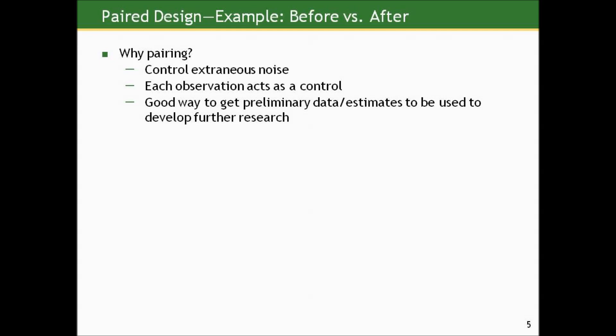So we're going to start with an example to set this up. This is data on 10 non-pregnant premenopausal women between 16 and 49 years old who were beginning a regimen of oral contraceptive use. These women had their blood pressures measured prior to starting oral contraceptive use and three months after consistent oral contraceptive use. The goal of this small study was to see what, if any, changes in blood pressure were associated with oral contraceptive use in such women. The data on the following slides show the resulting pre and post oral contraceptive use systolic blood pressure measurements for the 10 women in the study.